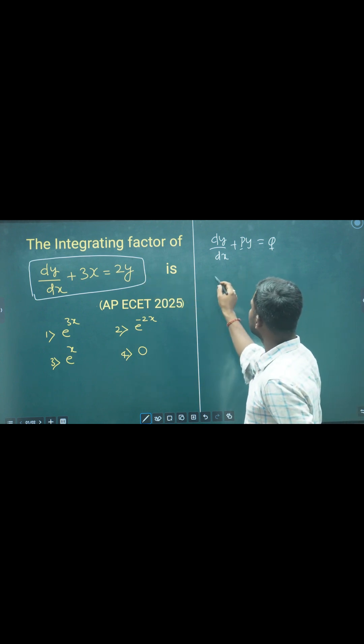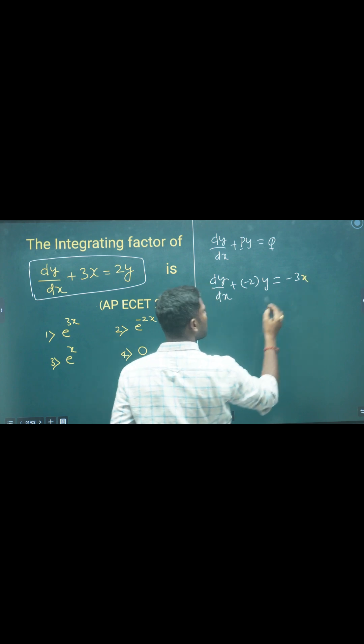Here, we can rearrange this equation as dy by dx plus p into y equals to q. Clear?